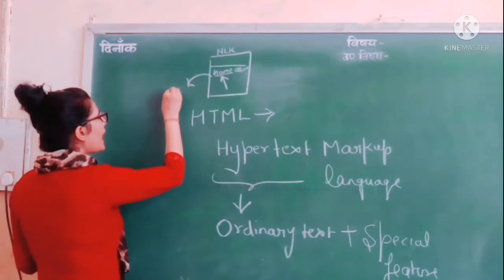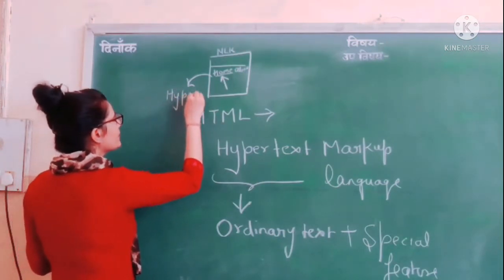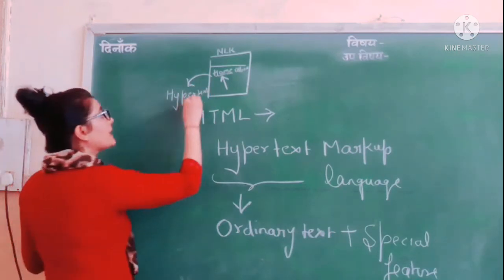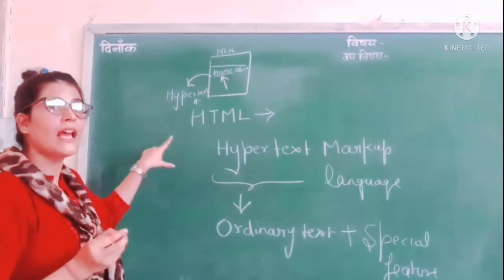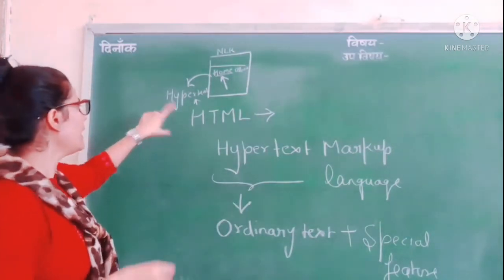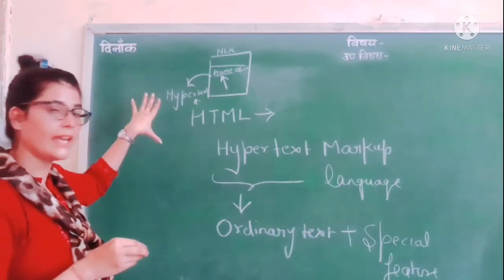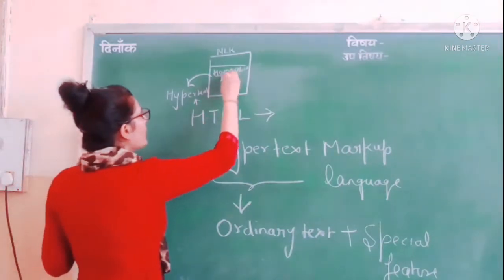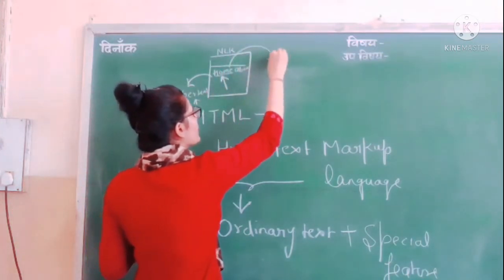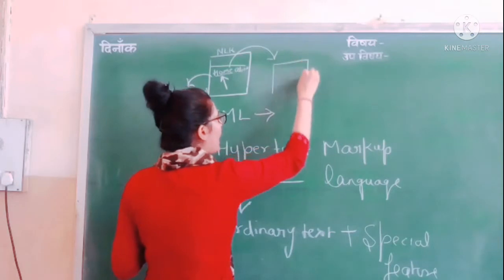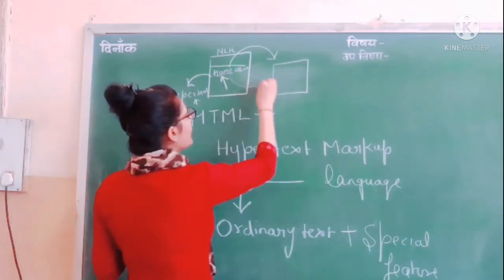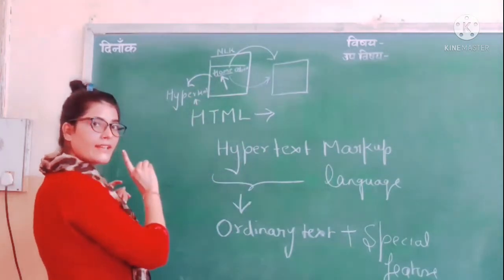When you click on the hypertext, hypertext is clickable — it has the property of being clickable. When you click on that particular text, it will jump to another page, or a relevant or related page of that particular text.